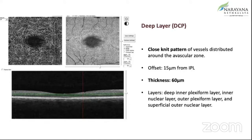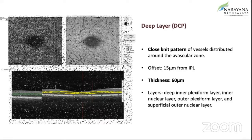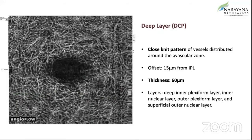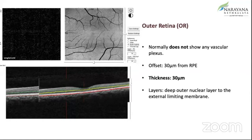Going on to the DCP or the deep capillary layers, this has a more close-knit pattern of vessels distributed around the avascular zone, and it's about 60 microns. What you see here are the deep inner plexiform layer, the inner nuclear layer, outer plexiform, and the superficial outer nuclear layer. Then there's the outer retina — here you normally don't see any vascular plexus. The offset is about 30 microns from the RPE and thickness is again 30 microns. The layers seen here are the deep outer nuclear to the external limiting layer.